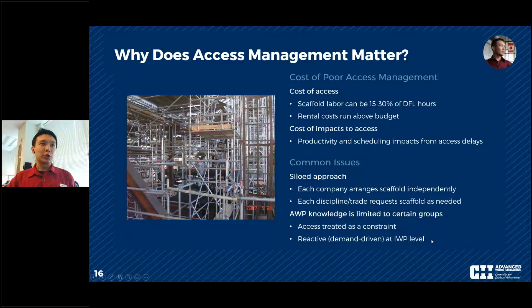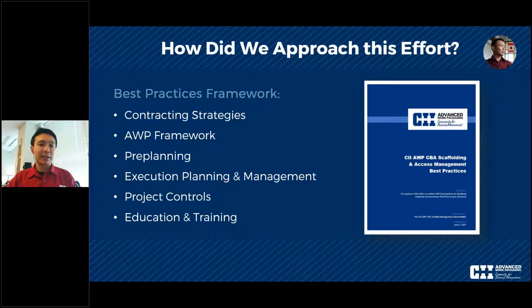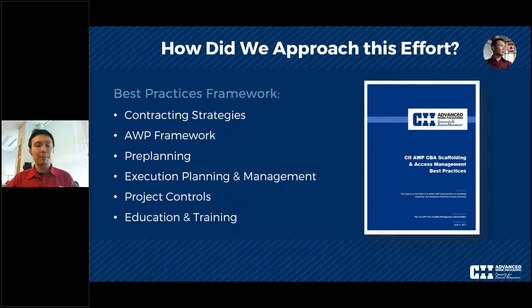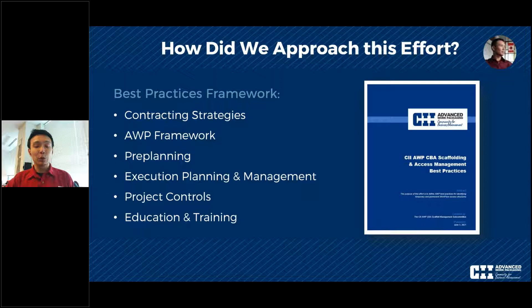With those common issues identified, we've taken the approach of breaking the best practice into six different sections: contracting strategies and setting up the commercial and strategic framework; the AWP framework for planning ahead; project controls covering cost and schedule; and education and training to get the workforce ready for an AWP approach to scaffolding.